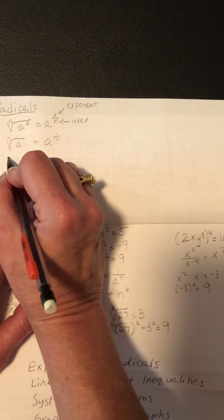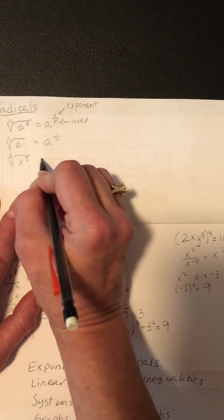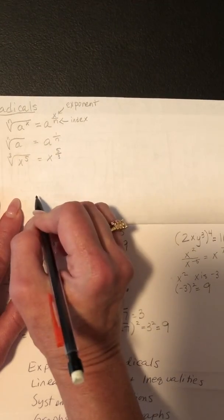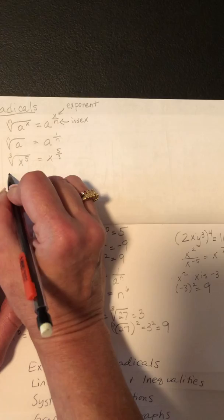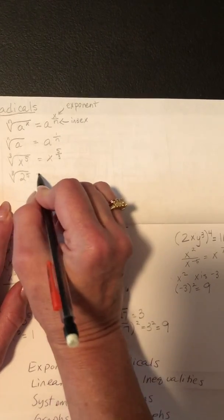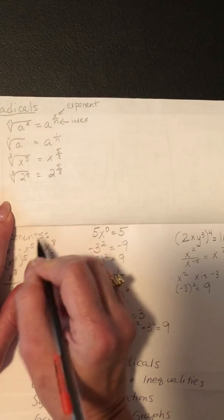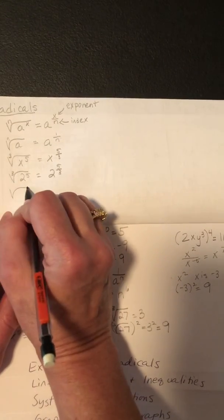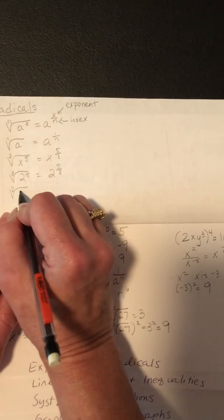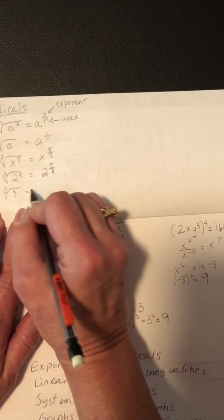With numbers: the cube root of x to the 5th is x to the 5/3. The cube root of 2 to the 5th is 2 to the 5/3. And if you have the cube root of something clean like the cube root of 8, you ask what times what times what is 8, and the answer is 2.